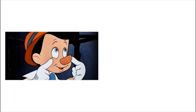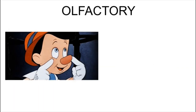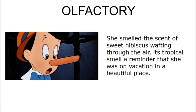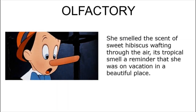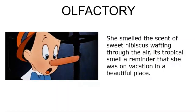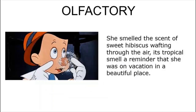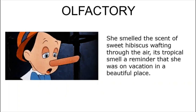If visual is about our sight, olfactory is connected with the nose or sense of smell. For example: She smelled the scent of the sweet hibiscus wafting through the air. Its tropical smell, a reminder that she was on vacation in a beautiful place. Not only does this sentence describe what the character was smelling at the time, it also gives us a glimpse of the setting of the story. It tells us that the person was not in her hometown, but somewhere else, on a vacation.